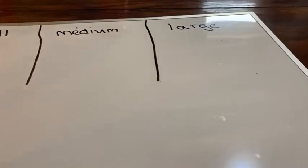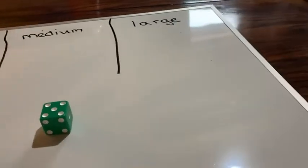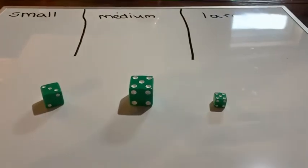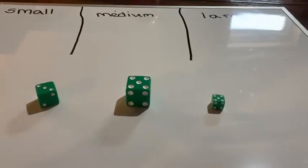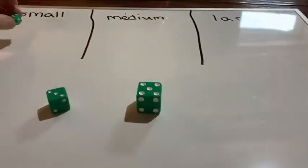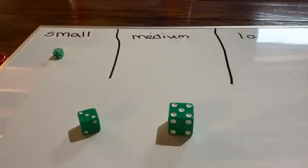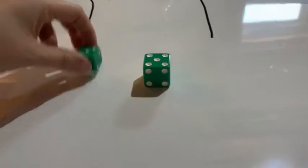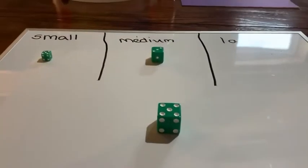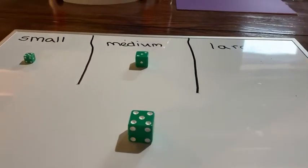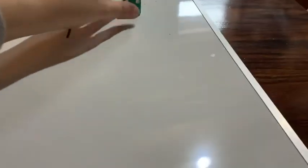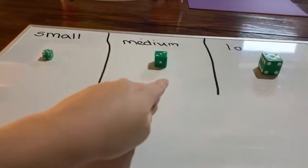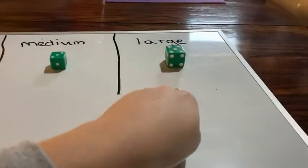Now let's look at our dice. Which one of our dice is small? Small. Which one of our dice is medium? Medium. Which one of our dice is large? Large. Medium. Large.